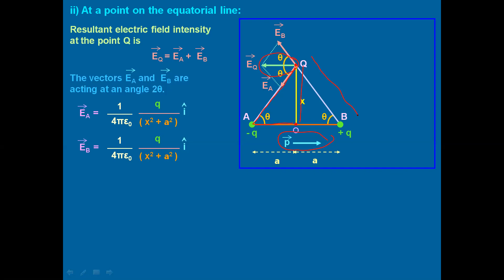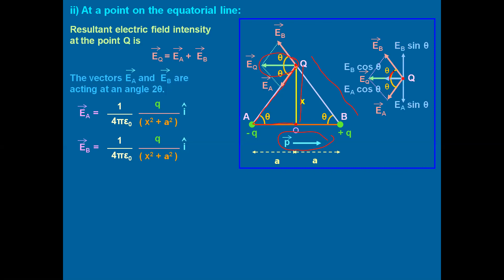In order to get the resultant, it is better to resolve the vectors Eb and Ea into their rectangular components. First, let us resolve them along the x-axis. They make an angle θ with Eq, so along the x-direction the components are Eb·cosθ and Ea·cosθ. The y-components will be Eb·sinθ and Ea·sinθ. So the two vectors Eb and Ea are resolved into four components: Eb·cosθ, Ea·cosθ, Eb·sinθ, and Ea·sinθ.